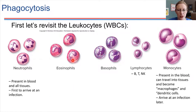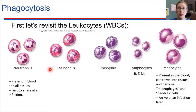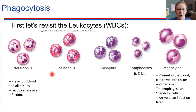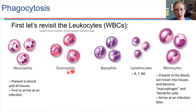The eosinophils — these are sometimes present in very low numbers. Oftentimes they're not needed in the body. But if there is a parasitic infection, like for example tapeworm, then the eosinophils' numbers are going to come up and they're going to work to address that issue. So these are primarily for dealing with parasites.